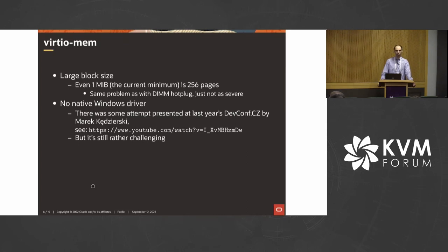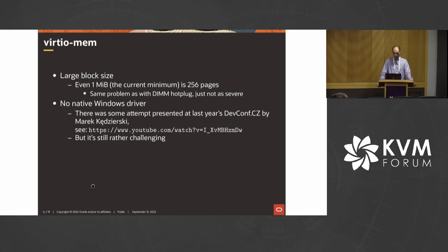The second popular resizing solution these days is VirtIO-mem, but it still has a fairly large block size — the current minimum is one megabyte, which is 256 pages. So it also has the problem that one stuck page in the block can prevent its removal. It's not as severe as with a 100-gigabyte DIMM stick, but it's still not management at the granularity of the hardware page.